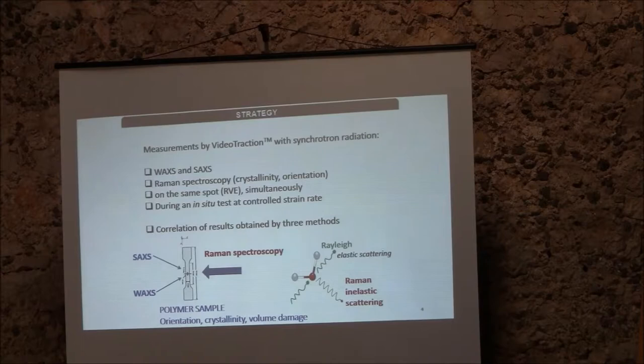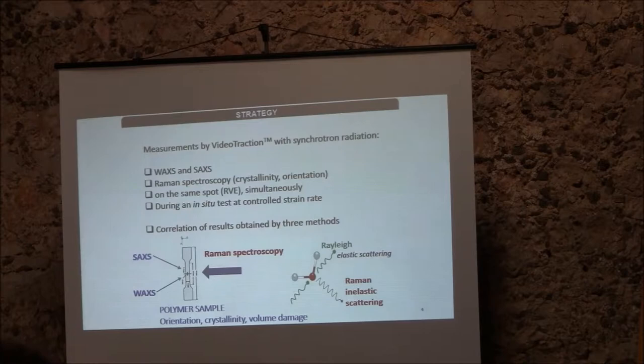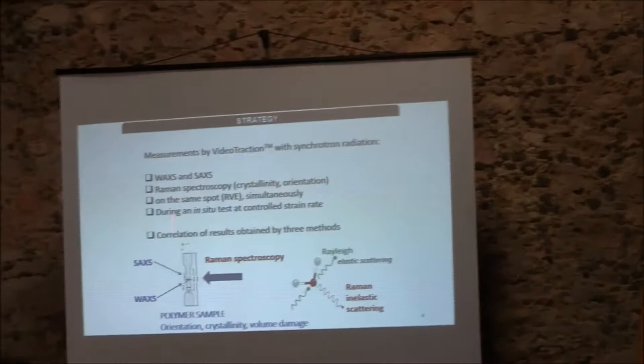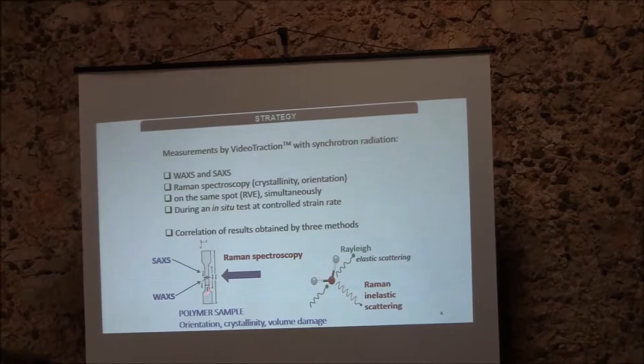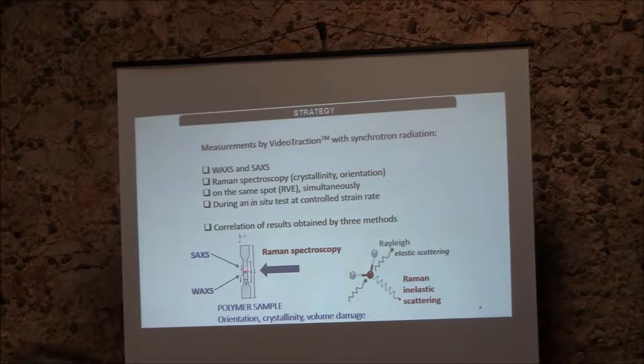The strategy of our team is to do measurements with a technique called video traction, combined with synchrotron radiation in order to have an intense beam. When you stretch a polymer it's very quick, so if you do this in the lab with a normal X-ray it's not going to be fast enough — we need an intense beam. We record the SAXS and WAXS data at the same time as we are stretching a sample, while also sending the monochromatic laser source from a Raman spectrometer.